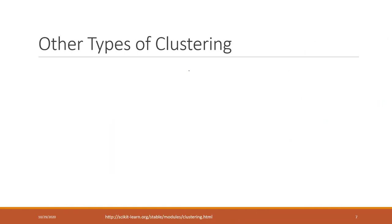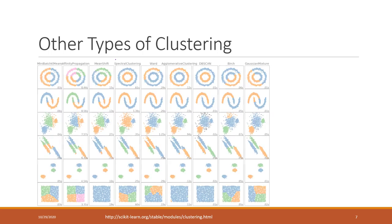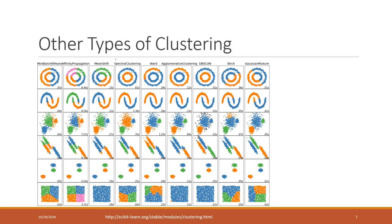K-means is the most popular clustering algorithm, but there are other types. If direction is very important, you may not want to use K-means. There are other options — for example, DBSCAN is another very famous clustering algorithm that can handle these cases better.